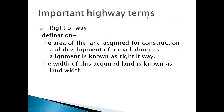The first important term of highway is Right of Way. The area of land acquired for the construction and development of a road along its alignment is known as the Right of Way. The total area required for the construction of a road, including the full road, constitutes the right of way, and the width of this acquired land is known as the land width.